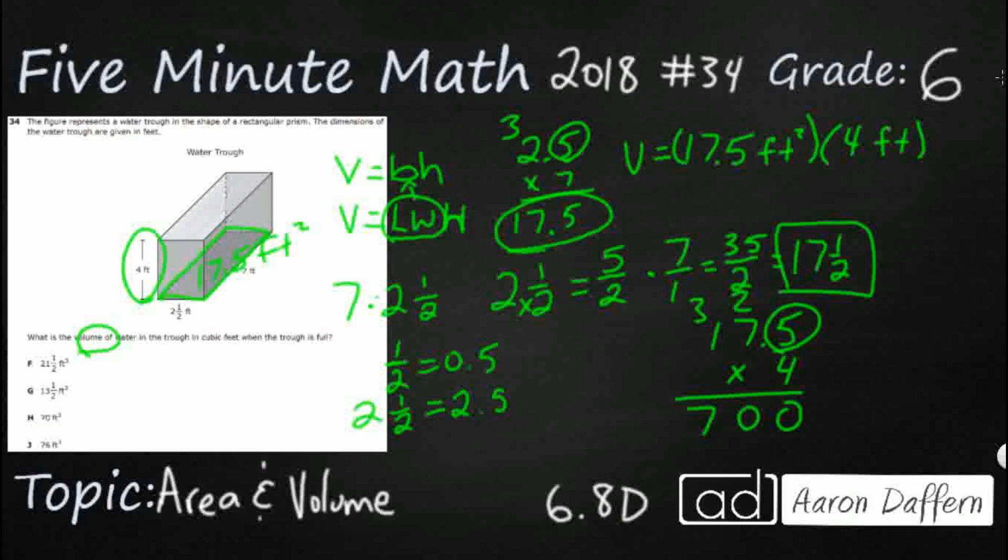And so our answer is going to be 70 feet cubed, feet to the third. So our answer is going to be H, 70 feet cubed, and we're looking at it that way in cubes because we have to imagine that we're putting little tiny cubes in here, and we multiplied feet times itself three times. That's why you have the exponent of three.